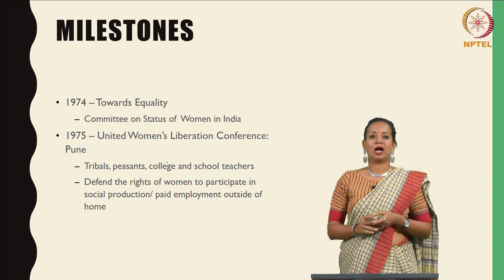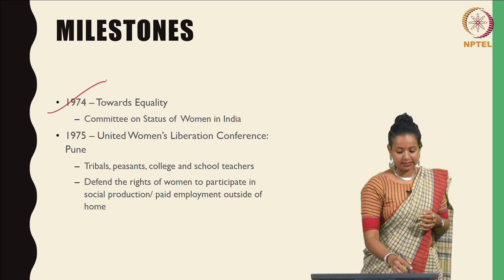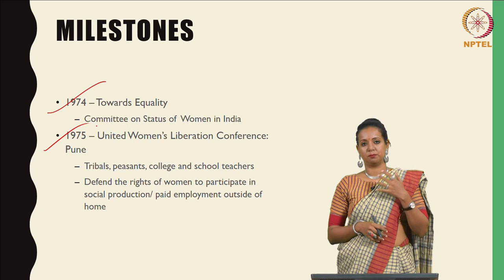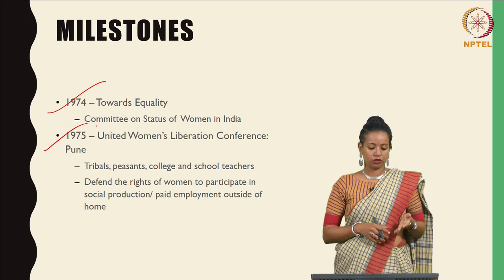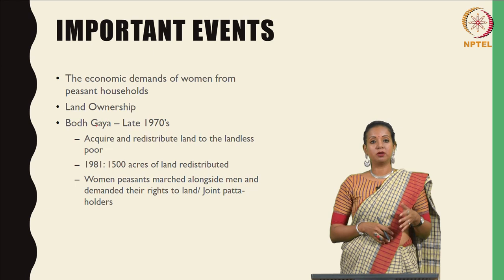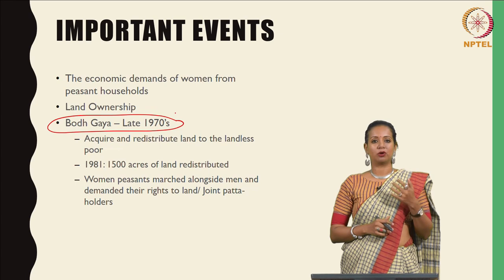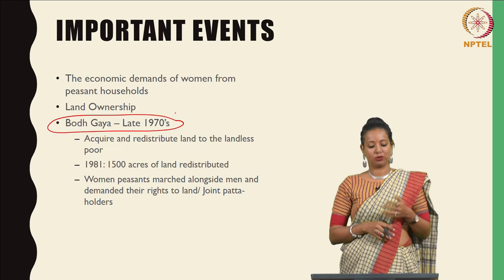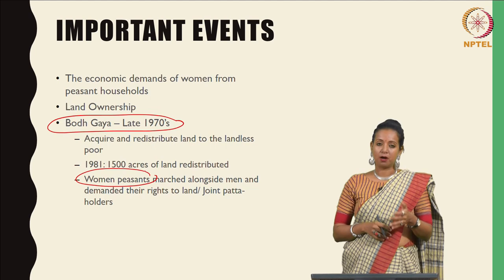Kalpana also outlined a number of milestones. In 1974, the Towards Equality Report was released by the Committee on Status of Women in India. In 1975, the United Women's Liberation Conference in Pune was attended by a wide variety of women — tribals, peasants, college and school teachers — where the conference defended the rights of women to participate in social production or paid employment outside the home. The economic demands of women from peasant households were emphasized, and Kalpana spoke specifically about the Bodhgaya struggle in the late 1970s about land ownership for women, where 1,500 acres were redistributed in 1981, but women peasants demanded their rights to land as joint patta holders alongside men.